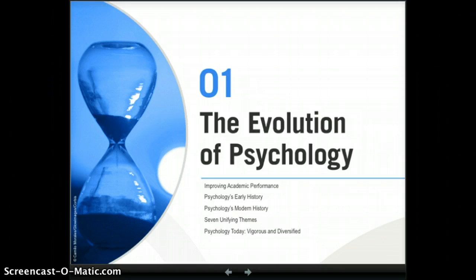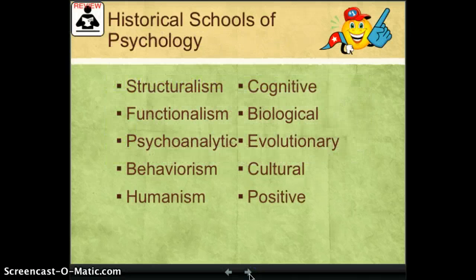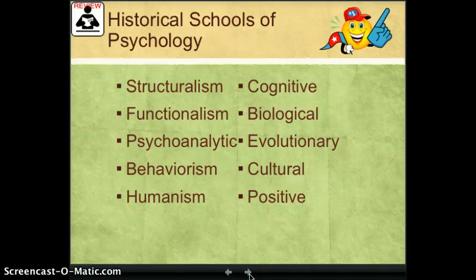Chapter 1: Unifying Themes. So far in the history of psychology, we've talked about the birth of psychology in 1879 and the development of these ten historical schools of psychology over the course of that history, ending with positive psychology, which was first developed in the 1990s.